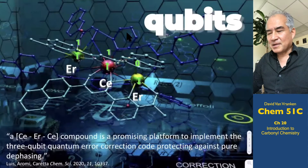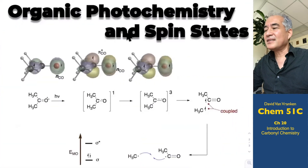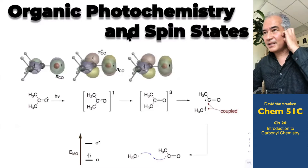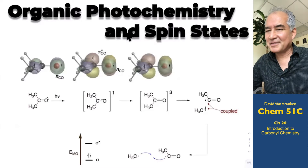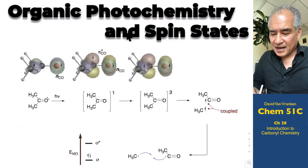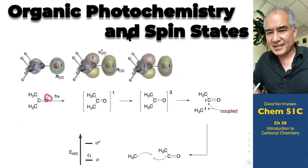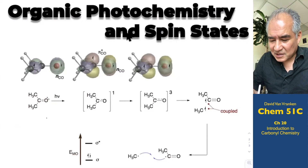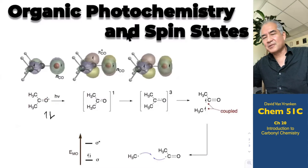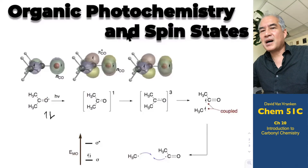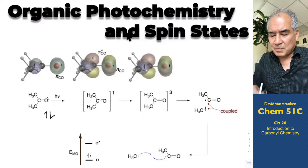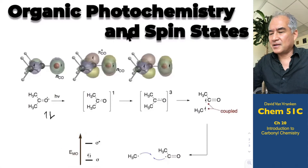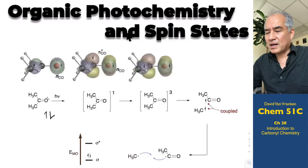We haven't talked much about electron spin in our course so far, but it does exist in organic chemistry. We may have talked about nuclear spin when discussing NMR, but let's talk about electron spin. Each electron dot can be associated with a spin — spin up or spin down. We like to pair those when we put them into molecular orbitals, whether it's a non-bonding, sigma-bonding, or pi-bonding orbital. When we put two electrons into an orbital, we show that those spins are opposite, and there are quantum numbers associated with those.